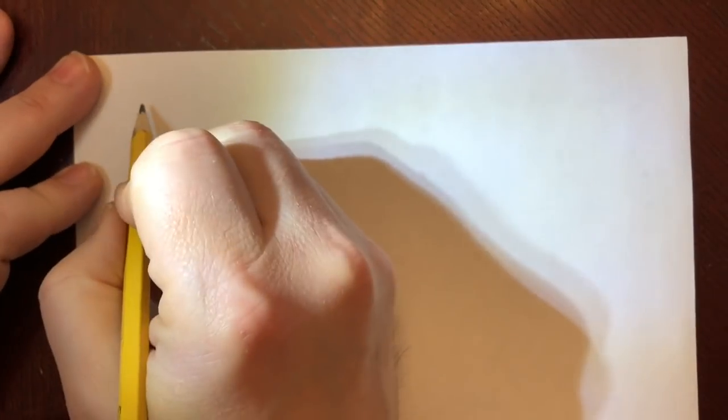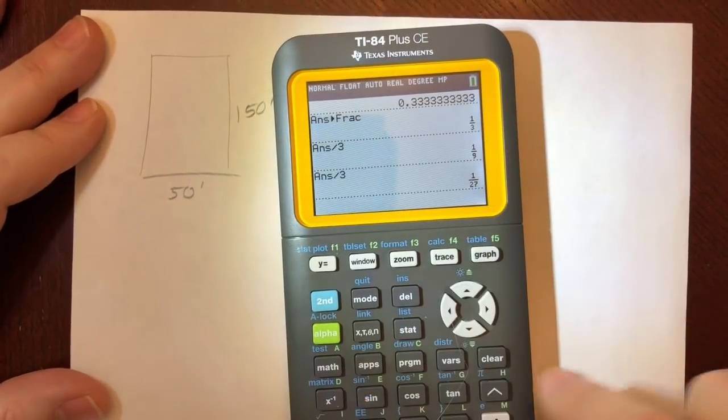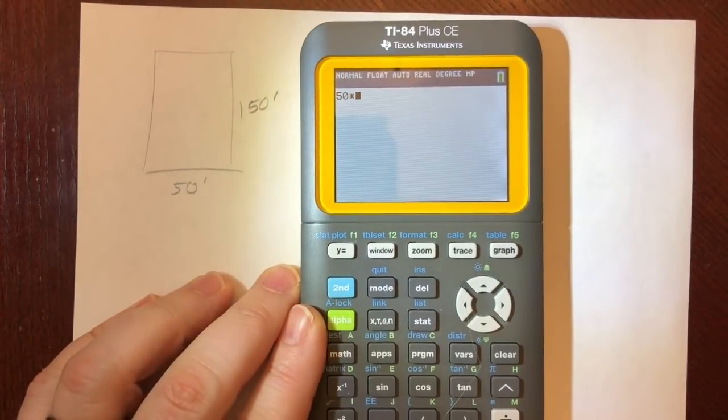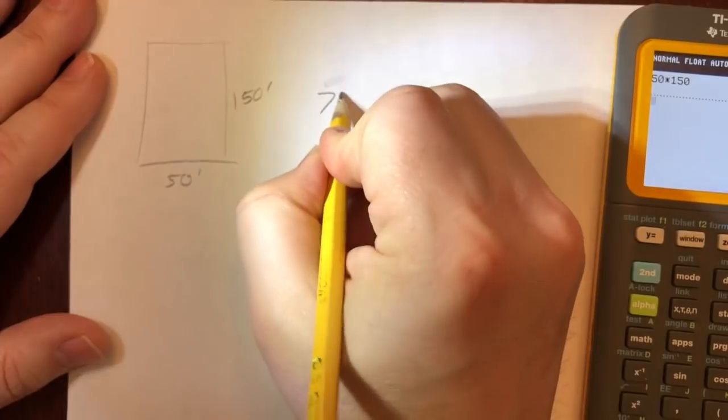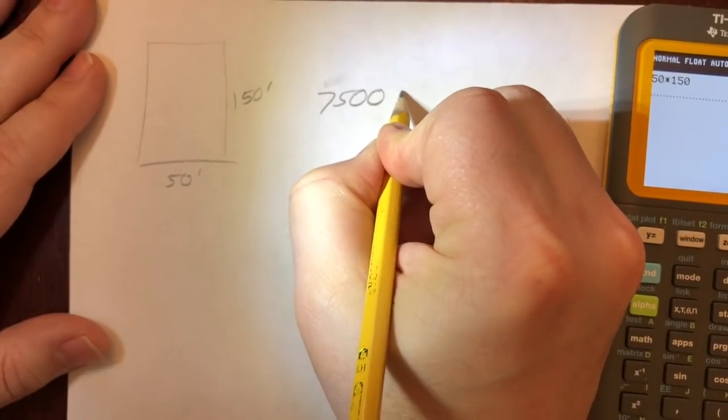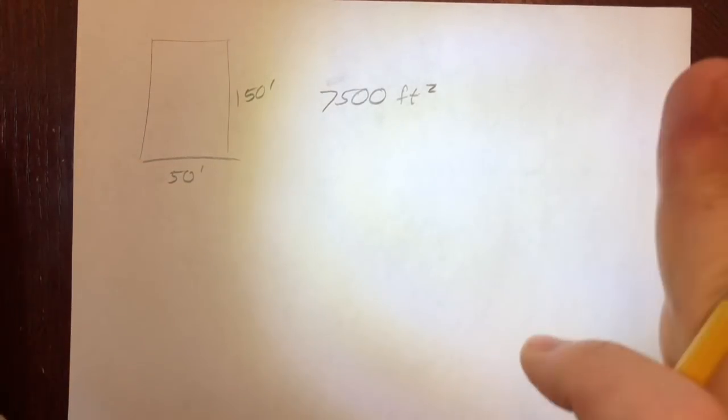Alright, so I estimate that that guy's house, this property, is probably if I use mine as an approximation, about 50 feet by 150 feet. So if on my calculator I multiply 50 by 150, that means that his property is 7,500 square feet.